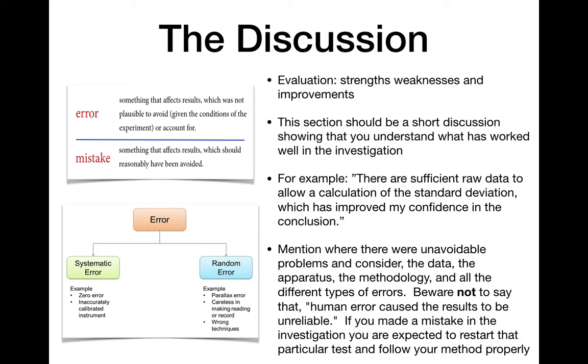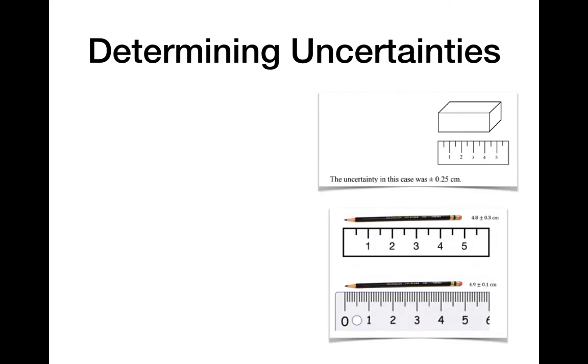And then we have systematic errors and random errors. Things like if you have equipment that's incorrectly calibrated. Let's say if you have a pH probe that's not working properly, but it's the same pH probe the whole time, meaning it's accurate between trials. Even though the value isn't true, the difference between the different values should still be true. And then we have random errors, careless mistakes, using the wrong technique, those kinds of things or other kinds of error.